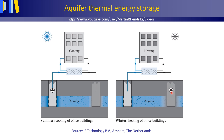The warm water is used for heating the building using its central heating system via a heat exchanger. The water that has cooled during the heat exchange process is again returned to the aquifer, now for later use in summer, and so on.